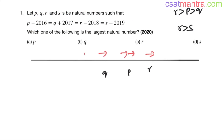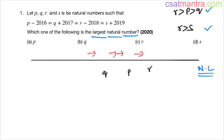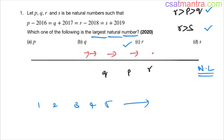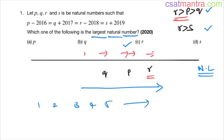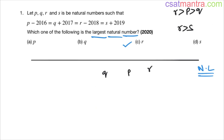Hold on — the problem is not over. What if the smallest natural number is asked? We have r greater than p, p greater than q, and r greater than s. On the number line — 1, 2, 3, 4, 5 — as you go right the numbers increase. So r is here, p is to its left, and q is further left. Now r is also greater than s, so s can be in different positions.